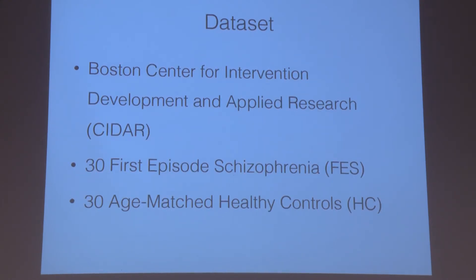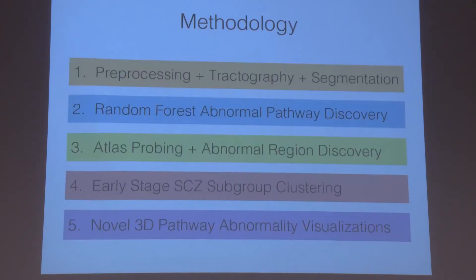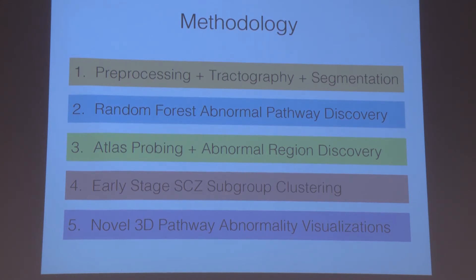The dataset used was a CIDAR dataset with 30 first-episode schizophrenia subjects and 30 age-matched healthy controls. The methodology can be split into five distinct sections: first, we input three-dimensional voxel data with the fourth-dimensional time value for diffusion and conduct preprocessing; we extract whole-brain tractography and segment various pathways; we use our novel random forest analysis to discover regions of risk in abnormal pathways; we conduct clustering; and finally create a novel three-dimensional visualization of these abnormal tracts.